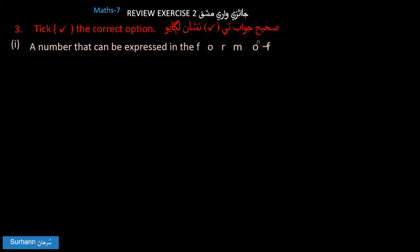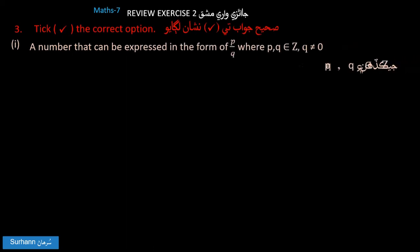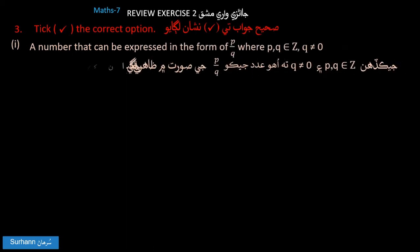A number that can be expressed in the form of P upon Q, where P and Q are members of Z (integers) and Q is not equal to zero, is a rational number.